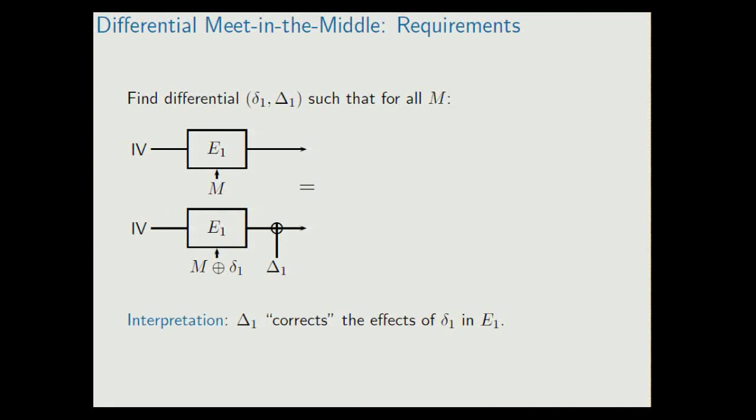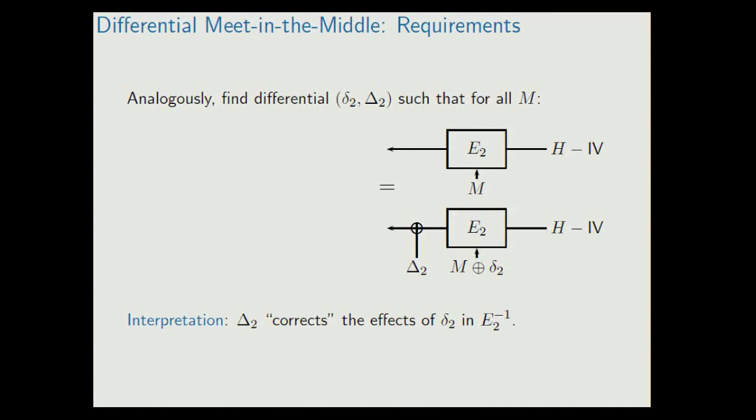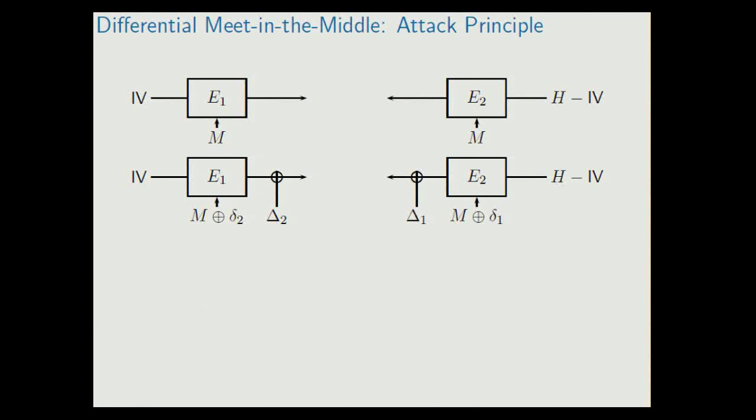The same thing we need for the backward direction, a δ2 differential. And then the principle of the attack is as follows. We pick a message, and we do these four computations: two computations in forward direction, two computations in the backward direction. Note here that this is the δ2 differential that holds for E2, and this is the δ1 differential that holds for E1. So these two computations and these two computations will not be the same in general.